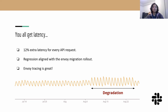Going back to the issue — we noticed 12% extra latency for every API request and traced it down to a bug in the session ticket keys configuration. The bug was that sometimes the keys used to generate these session tickets were not synchronously rotated across all Envoys. This means sometimes a request would come with a key that Envoy doesn't know about yet and therefore required a full TLS handshake. Ensuring synchronous key rotation across all Envoys fixed the latency issue.